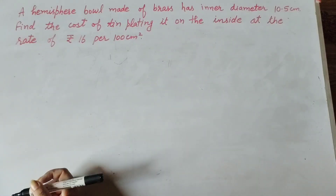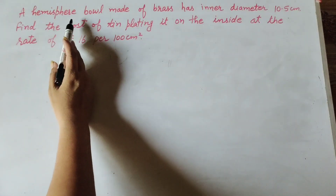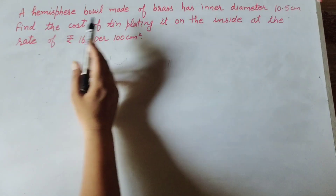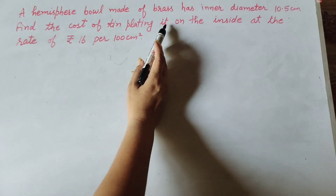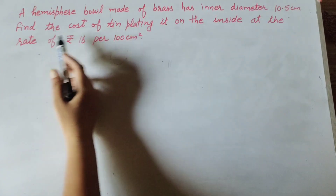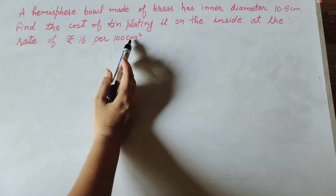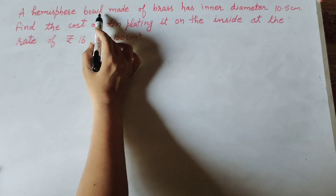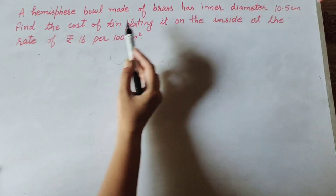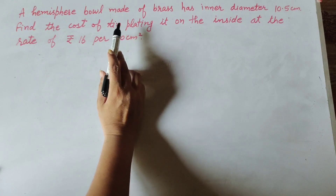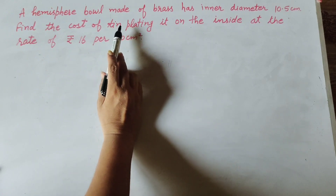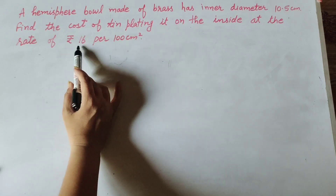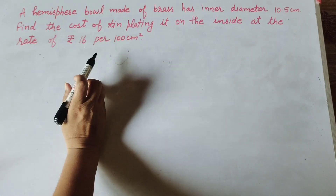Hello friends, welcome to my channel. In this video we discuss: a hemisphere bowl made of brass has inner diameter 10.5 centimeter. Find the cost of tin plating it on the inside at the rate of rupees 16 per 100 centimeter square. Given is the inner diameter of the hemispherical bowl, that is 10.5 centimeter, and we find the cost of tin plating the inside of the bowl if the cost of 100 centimeter square is rupees 16.